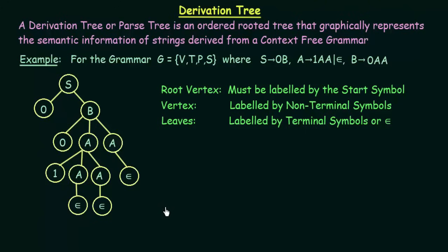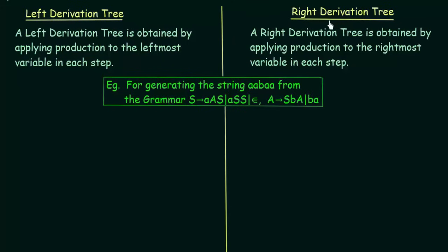There are two types of derivation trees we need to know: the left derivation tree and the right derivation tree. A left derivation tree is obtained by applying production to the leftmost variable in each step. A right derivation tree is obtained by applying production to the rightmost variable in each step. Whenever we are forming a derivation tree, if we apply the production to the leftmost variable in each step, those are known as left derivation trees, whereas in a right derivation tree, we apply the production to the rightmost variable.